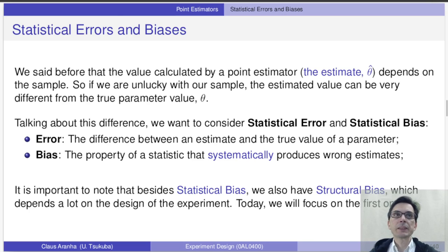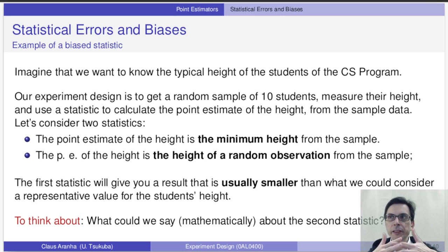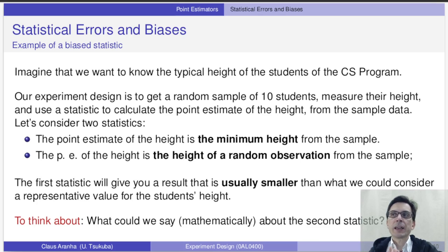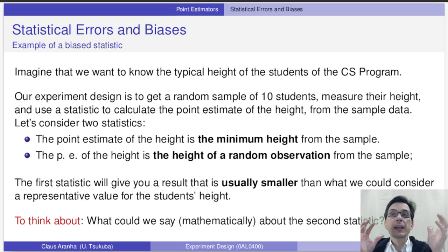Let's see an example of statistical bias. We are back again with the calculate-the-height-of-students example. This time in our experiment we choose 10 students truly randomly from the entire university and we calculate the height of each student. Just to understand the concept of bias better, let's consider two other statistics: the first is to use the height of the shortest of the 10 students as our representative height; the second is to use the height of only one of the 10 students in the sample at random.